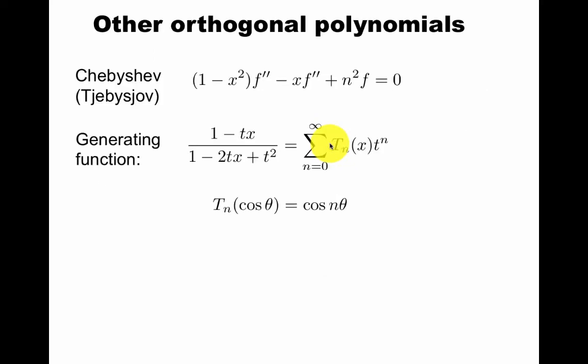What about others? We have two examples, Legendre and Fourier. Chebyshev, in Swedish and German and other languages spelled with a T, so they're called with a T even though the English spelling is with a C. They solve this equation. The general function is this, and they satisfy this interesting property. This equation generates lots of interesting trigonometric identities.